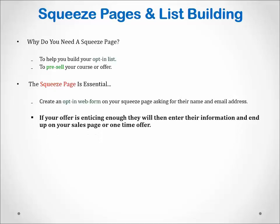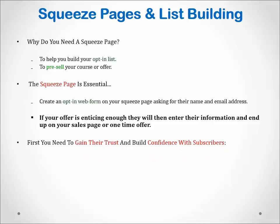If your offer is enticing enough, they will enter their information and end up on your sales page. They may not buy right then, but now you have their information where you can follow up with them later, either by direct email from you or through your autoresponder program. It's a known fact that most customers do not buy the first time. It may take five, seven, or more contacts from you before they do buy what you're offering.